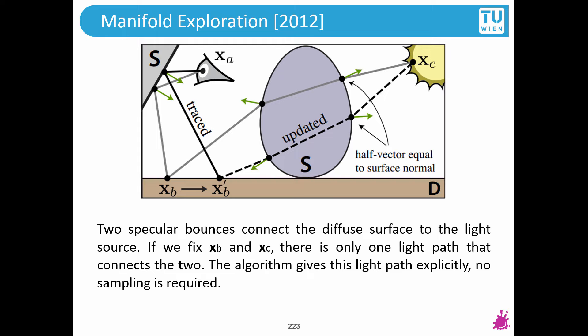Between XB and XC we have two specular bounces. Imagine that I am fixing XB and XC — these are two fixed vertices. If I have this glass egg in between that is perfectly specular, then I can write an algorithm that computes what should be the exact outgoing direction from this diffuse vertex in order to exactly hit that XC point. There is only one possible path because we have perfectly specular interreflections in between. So what should be this outgoing direction from XB? This is the equation solving system that we are interested in.